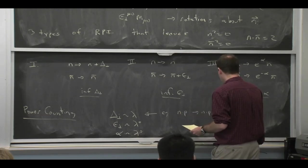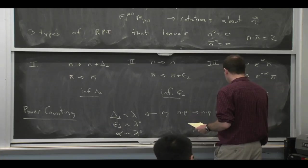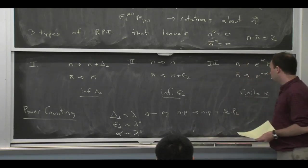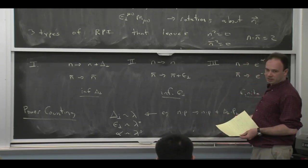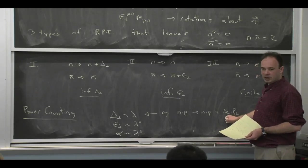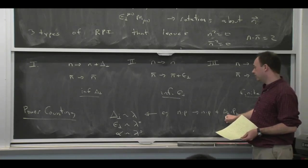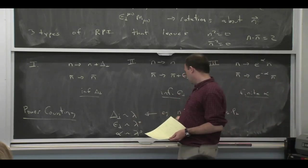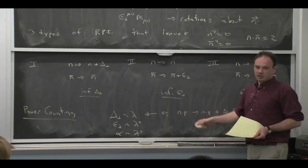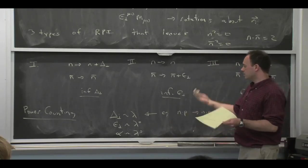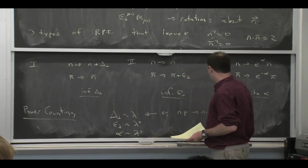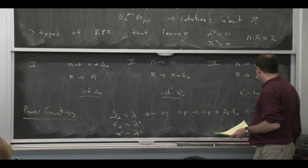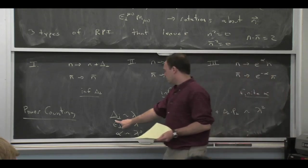That becomes n mu p mu plus delta perp dot p perp. So this is order lambda squared. This would be order lambda squared. But this momentum here is order lambda. So you need to have a power counting for the delta perp that makes it of order lambda in order to keep the transformed guy the same size as the guy you started with, because I don't want to consider transformations that would take me away from my power counting that would violate it.